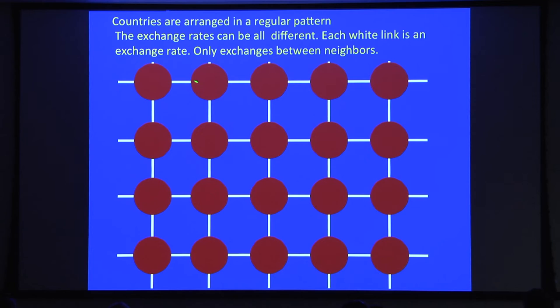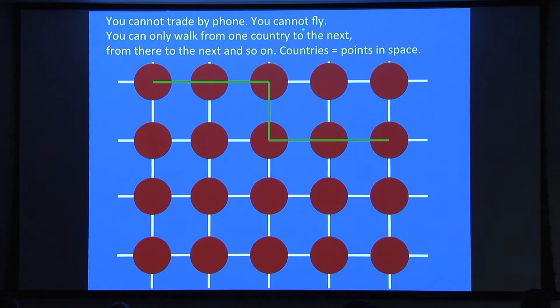The exchange rates can all be different. Imagine a bridge connecting two countries with a little bank at the bridge that sets the exchange rates. We only have exchange rates between neighbors. In the real world you can exchange money from one country with any different country, but that would be a link connecting far neighbors — we don't have this in physics. We only have exchange rates between two nearest neighbors.